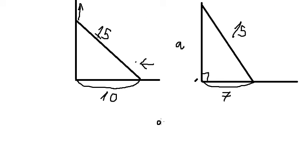So we have a equals square root of 15 squared minus 7 squared, and we get about 4 multiplied with the square root of 11.